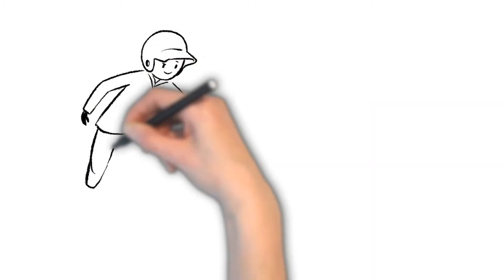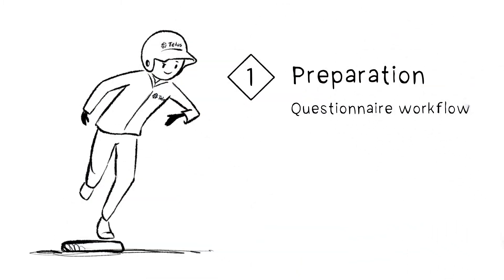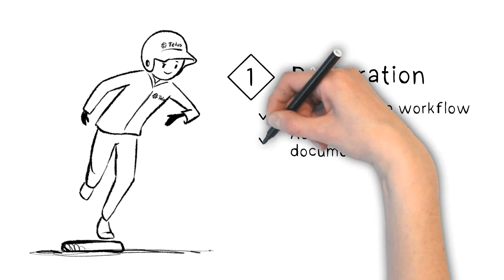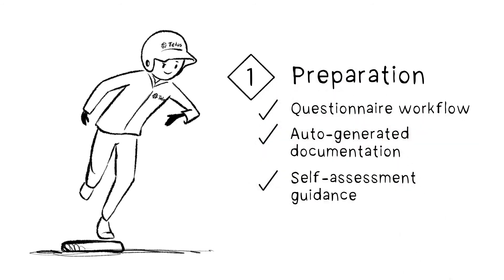In the pre-authorization phase, Xacta uses a questionnaire-driven workflow to streamline the process and determine the relevant controls. It automatically creates system-specific documents and a test plan you can use to conduct a self-assessment.